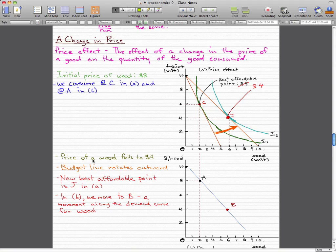Now let's imagine that the price of wood falls to $4. The best affordable point before was $8, which was at C. Now the best affordable point is $4, and that is at point J.